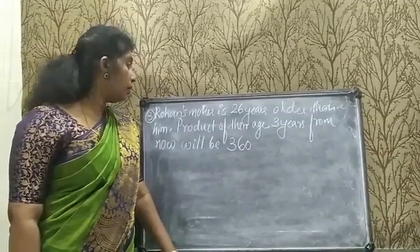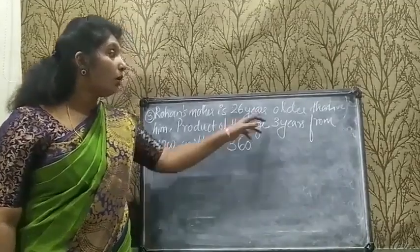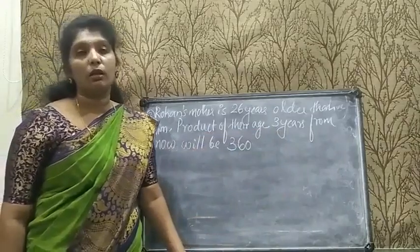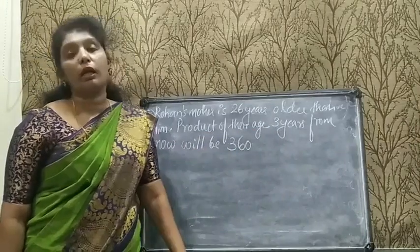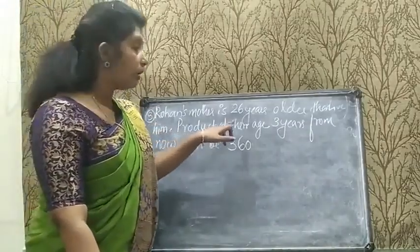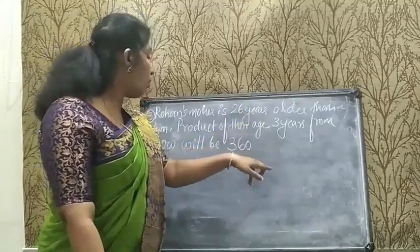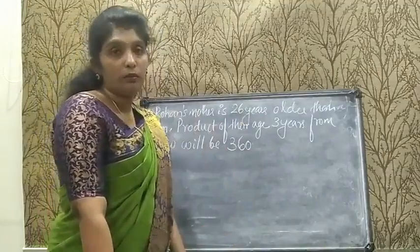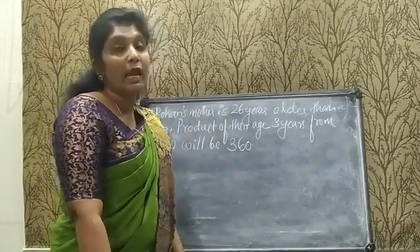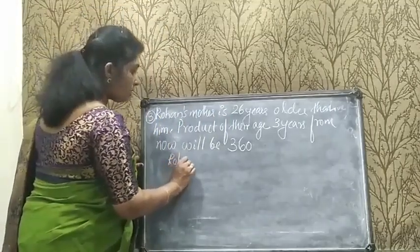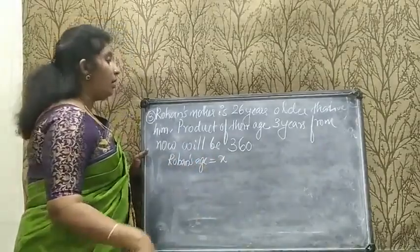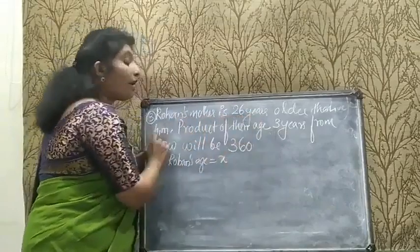The next question: Rohan's mother is 26 years older than him, and the product of their ages 3 years from now will be 360. We need to represent this as a quadratic equation. They are talking about the product of ages 3 years from now of Rohan and his mother.